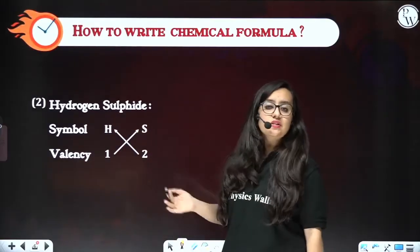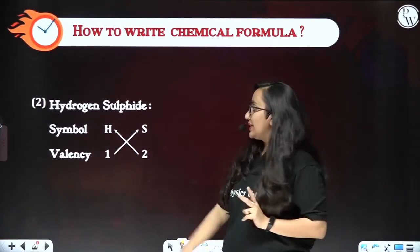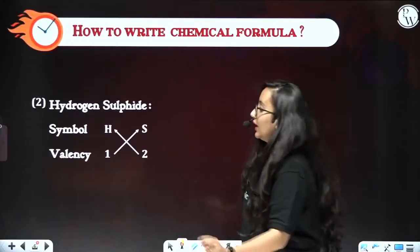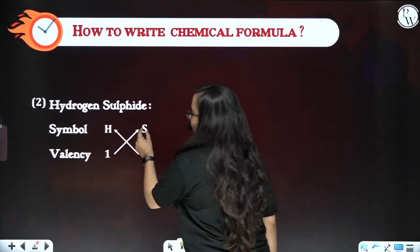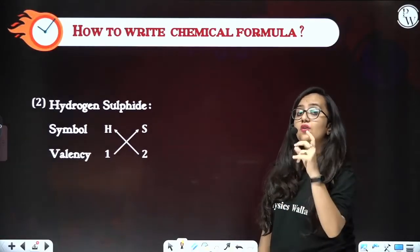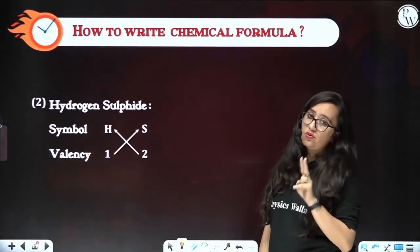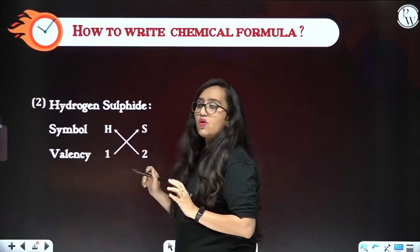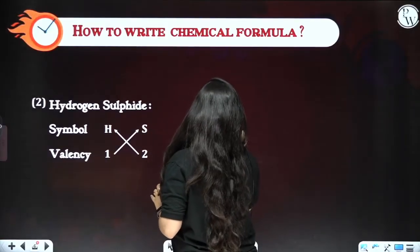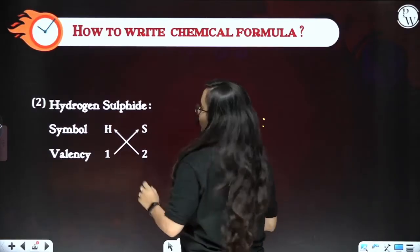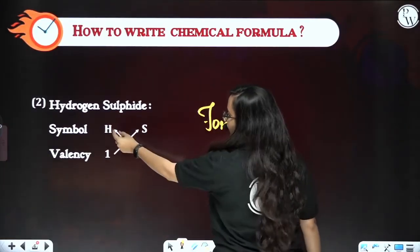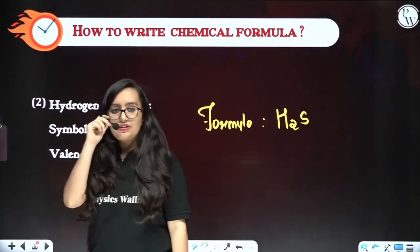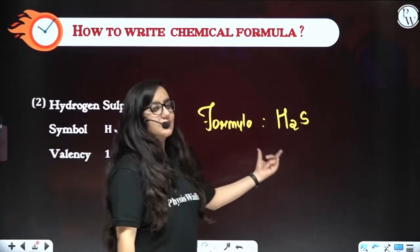Next is hydrogen sulfide. There are two elements — hydrogen and sulfur (symbol S). The valency of hydrogen is 1, and for sulphide it is 2 — it needs two electrons to complete its octet. We cross-multiply: two goes to H and one goes to S, so the formula becomes H₂S.